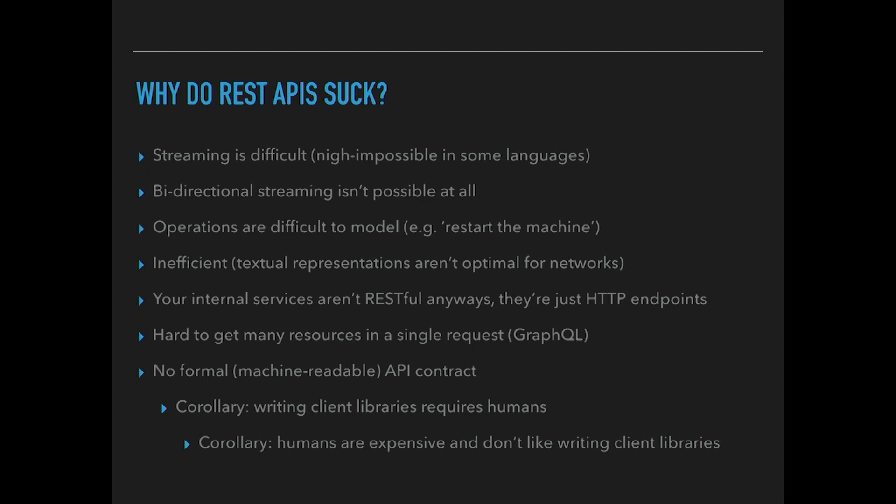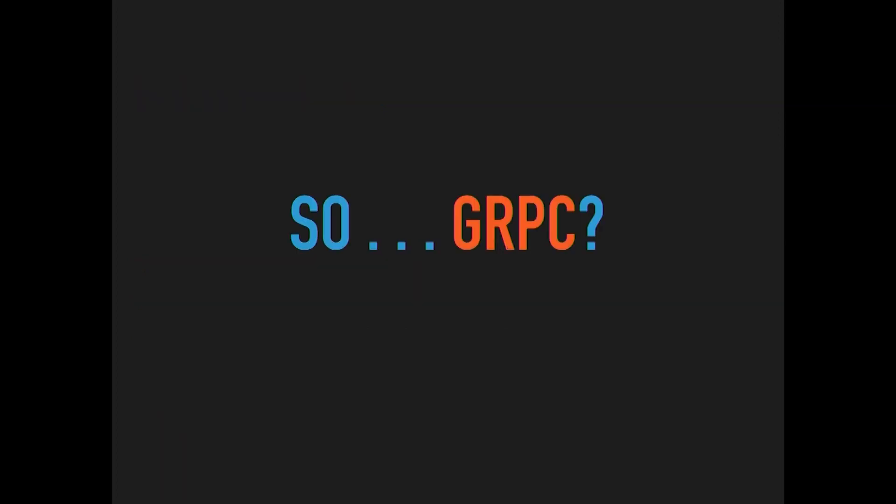Streaming is difficult. You can't even do bi-directional streaming. It's not as efficient as it could be. There's no formal API contract, no machine-readable contract, which is why we have to get humans to write client libraries for them. Humans are expensive, and they don't like writing client libraries. A machine should do it.